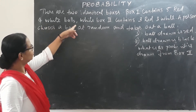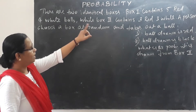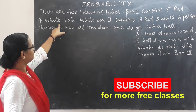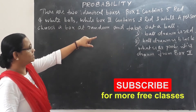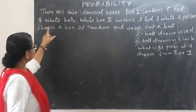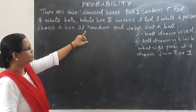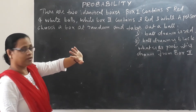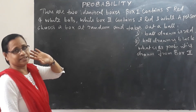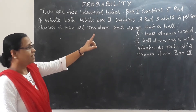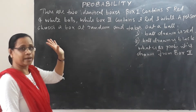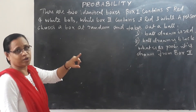There are two identical boxes. Box 1 contains 5 red and 4 white balls, while box 2 contains 3 red and 3 white balls. A person chooses a box at random and takes out a ball. First question: find the total probability that the ball drawn is red using the Theorem of Total Probability.